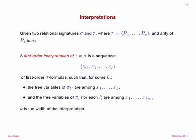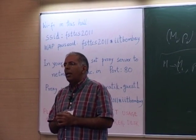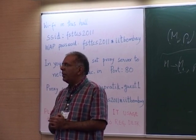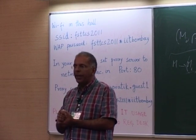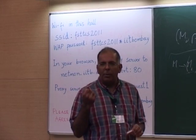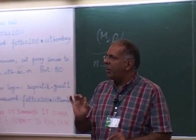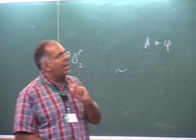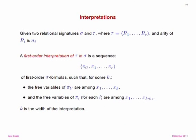I'm going to talk a little bit about first-order interpretations. When Ramanujam was talking about encodings, Supratik asked what it means for something to be first-order definable, and I'm going to pin that down more precisely. Say we have two relational vocabularies sigma and tau — relational meaning they have no function symbols. Tau consists of relations R1 to Rr with arities n1 to nr.